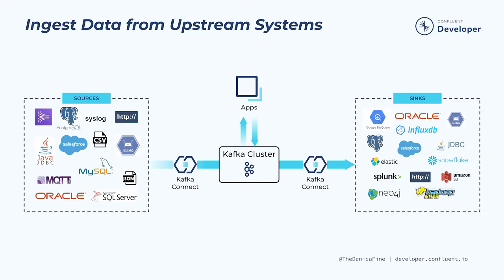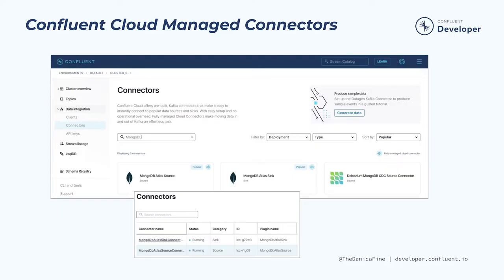Some of the most popular connectors include relational databases, cloud object stores, message queues, NoSQL and document stores, and cloud data warehouses. We'll be focusing on running Kafka Connect more in the course modules that follow, but for now you should know that one of the really cool features of Kafka Connect is that it's flexible. You can choose to run Kafka Connect yourself or take advantage of the numerous fully managed connectors provided in Confluent Cloud for a fully cloud-based integration solution.